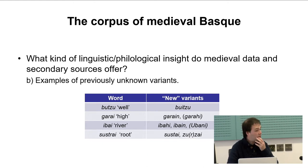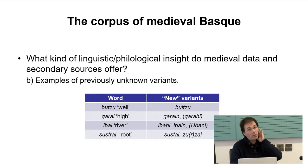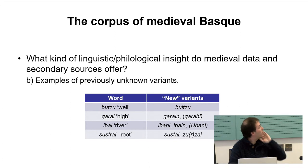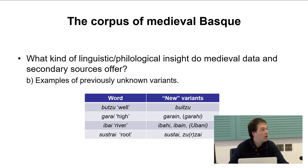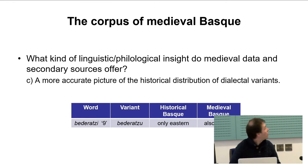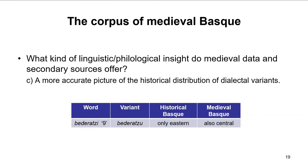I have also found previously unknown variants of several words. For 'putzu' there is a variant 'buitzu', which will prove crucial for some reconstruction problems. For 'garai' we have things like 'garain' and 'garahi'; for 'ibai' I found 'ibahi' and 'ibain', and there is also 'ubani'. For 'sustrai' meaning 'root', there is 'sustai' and 'sursi', which are all up to now unknown variants of those words.